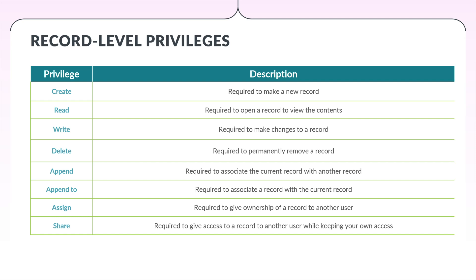Append To is required to associate a record with the current record. For example, if users have Append To rights on an opportunity, they can add a note to the opportunity. Assign is required to give ownership of a record to another user. Share is required to give access to a record to another user while keeping your own access.